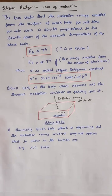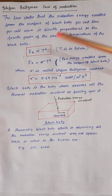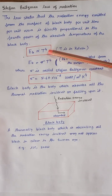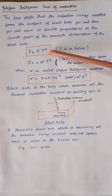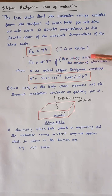Stefan-Boltzmann law of radiation states that the radiation energy emitted from the surface of a black body per unit time per unit area is directly proportional to the fourth power of the absolute temperature of the black body. So Eb is directly proportional to T to the power 4, where Eb represents the energy emitted from the surface of the black body.